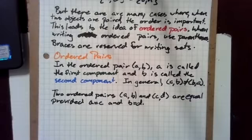Two ordered pairs (a,b) and (c,d) are equal provided a equals c and b equals d. In other words, the first components of each pair are the same and the second components of each pair are the same.